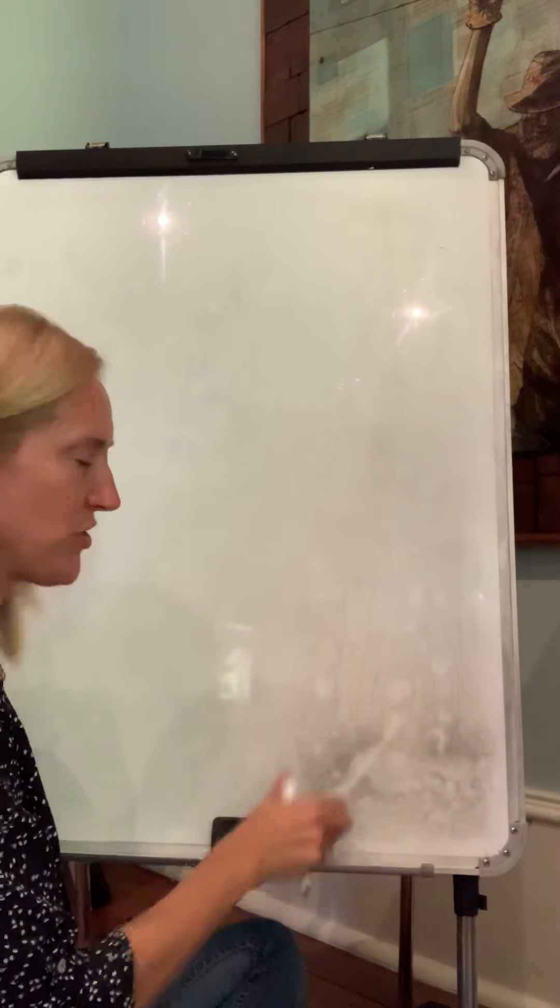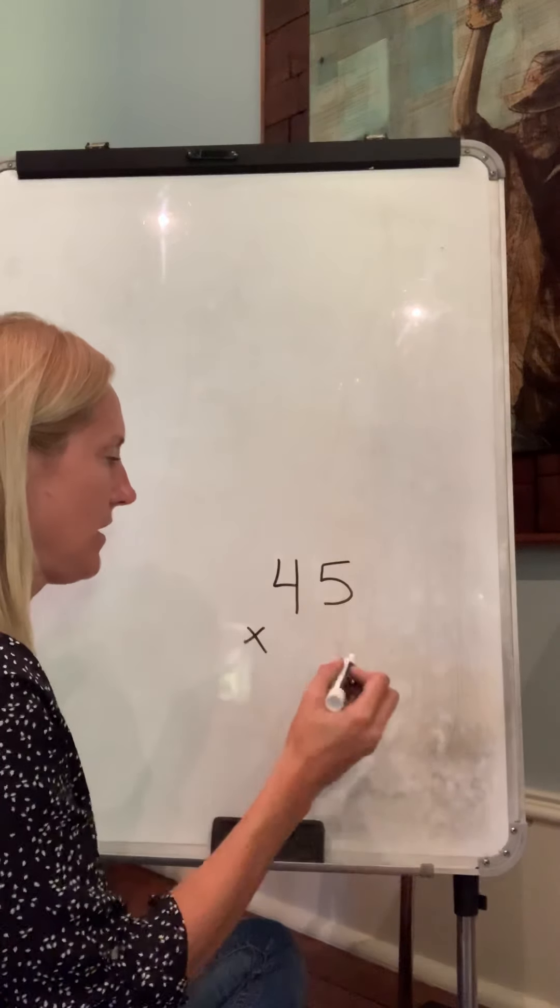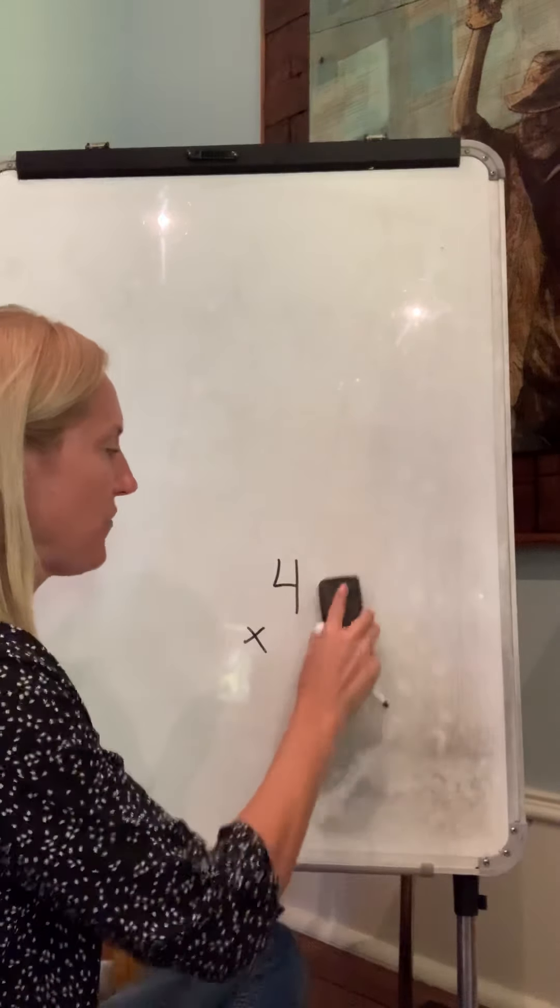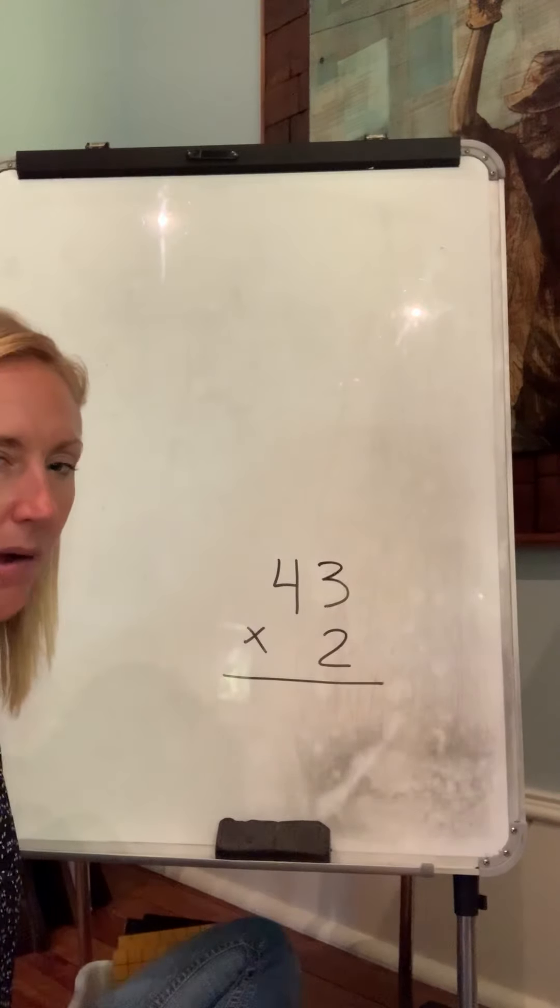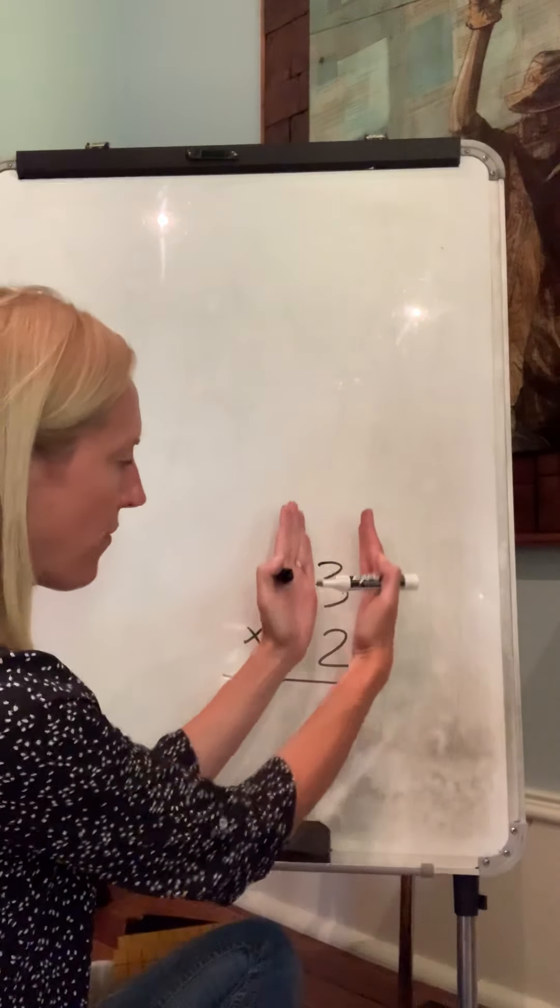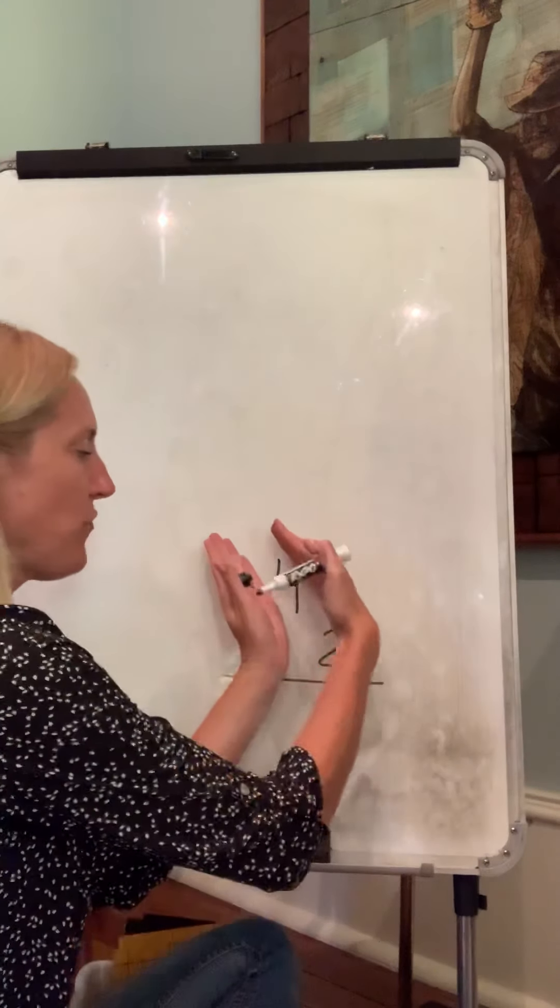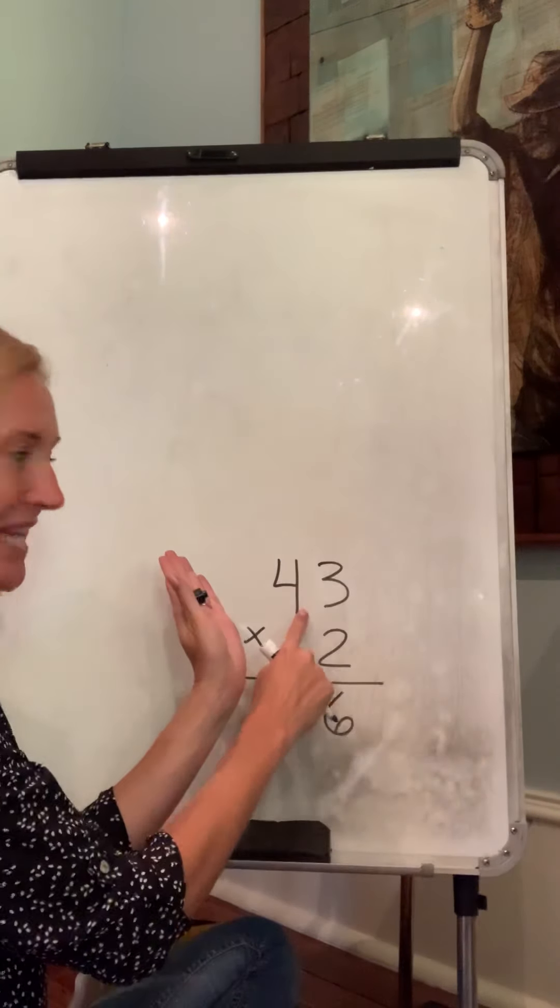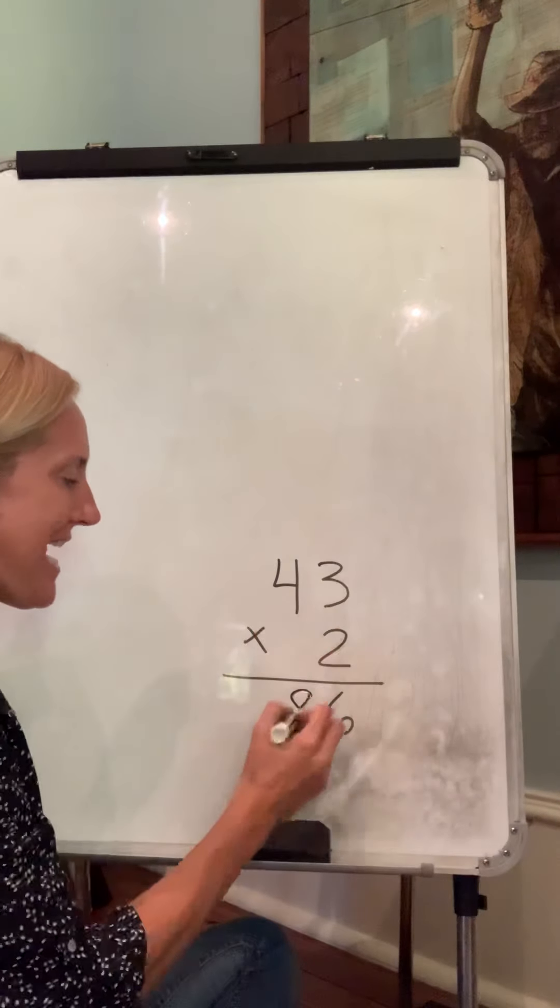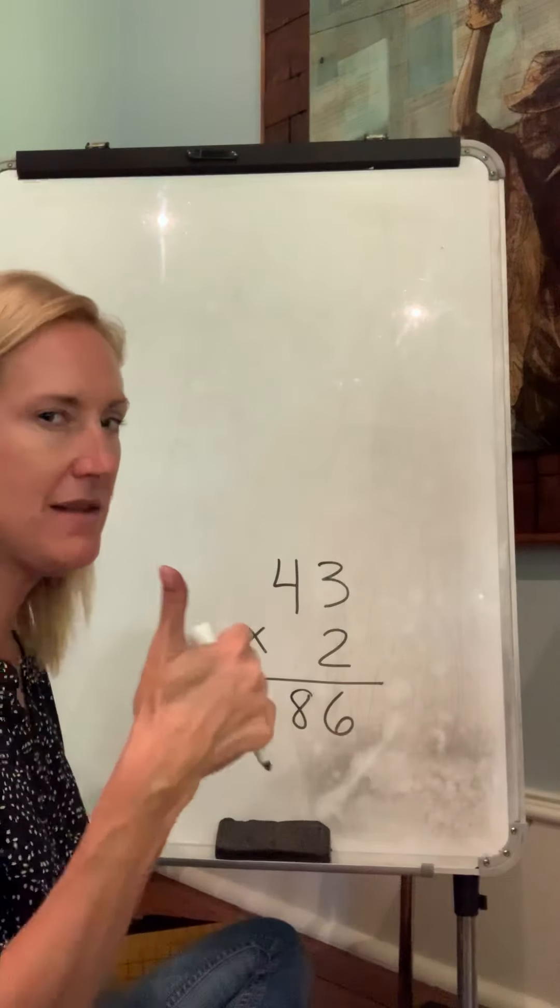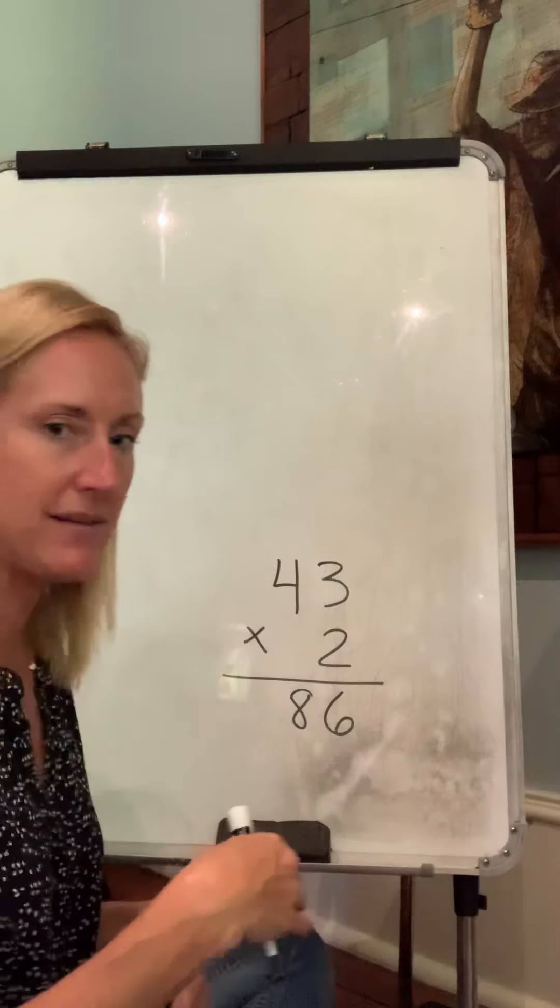So why don't you guys try one of these on your own? How about forty-three times two. Remember, we want to do three times two first, which is six. And then we want to do four times two, which is really forty times two. Four times two is eight, or eighty. Eighty-six. This makes sense. You feel good about this? If you want to, you could practice a few of these problems and then come back to this video.